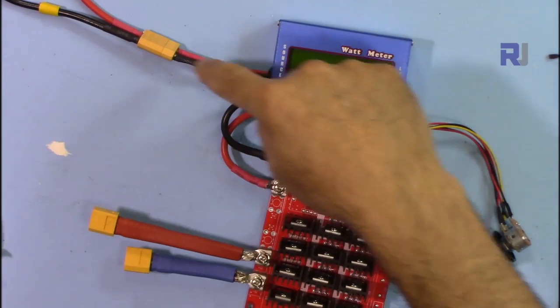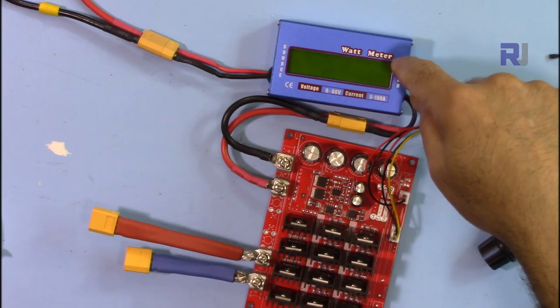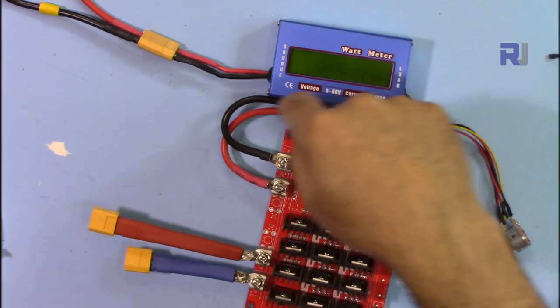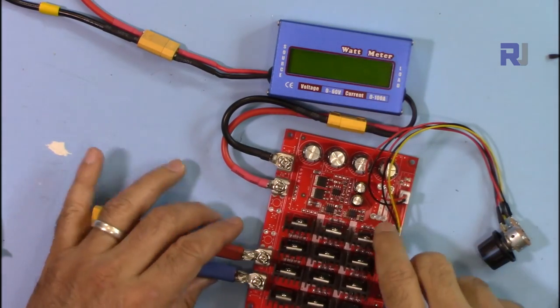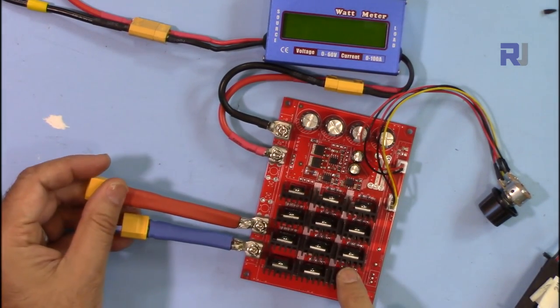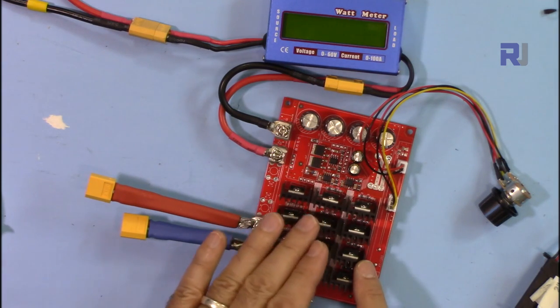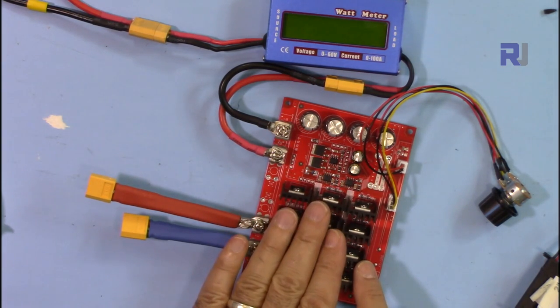Now I have connected the input, it goes through this watt meter which shows the power, current and input voltage. It comes here at the input and the module will be connected from here to the electronic load so I can see if it can handle 10, 20, 30, 40, 50 even 60 ampere. Let's start the test.